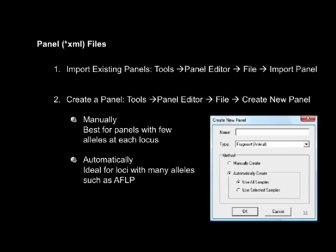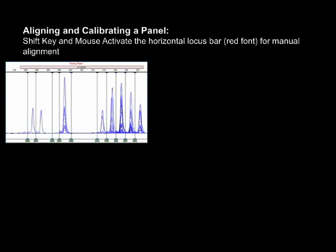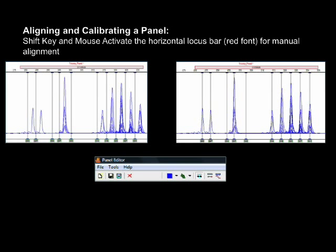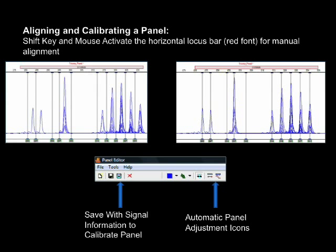If the panel for your analysis is not in the drop-down menu of the Run Wizard, click on Tools > Panel Editor to activate the panel editor. The file drop-down menu has options to import panels, or the pop-up menu provides options to create a panel using either manual or automatic methods. Minor variations in CE conditions may result in a faster or slower run. Panels are easily aligned to samples, positive controls, or allelic ladder samples. Use the mouse while holding down the keyboard shift key to physically drag the marker into the aligned position. Saving with signal information calibrates the panel with the CE instrument; in subsequent runs, the auto panel adjust icon may then be used to align the panel.